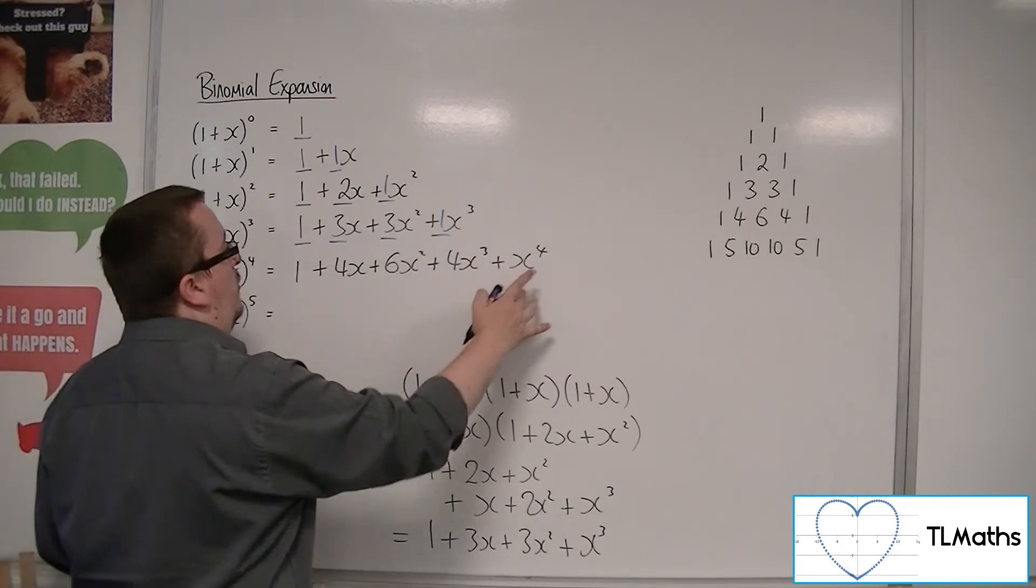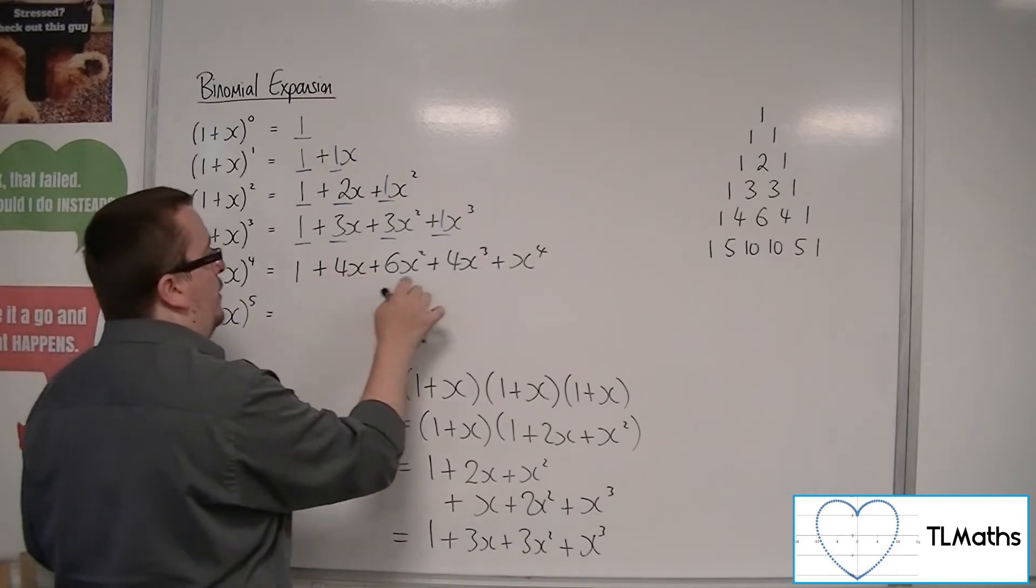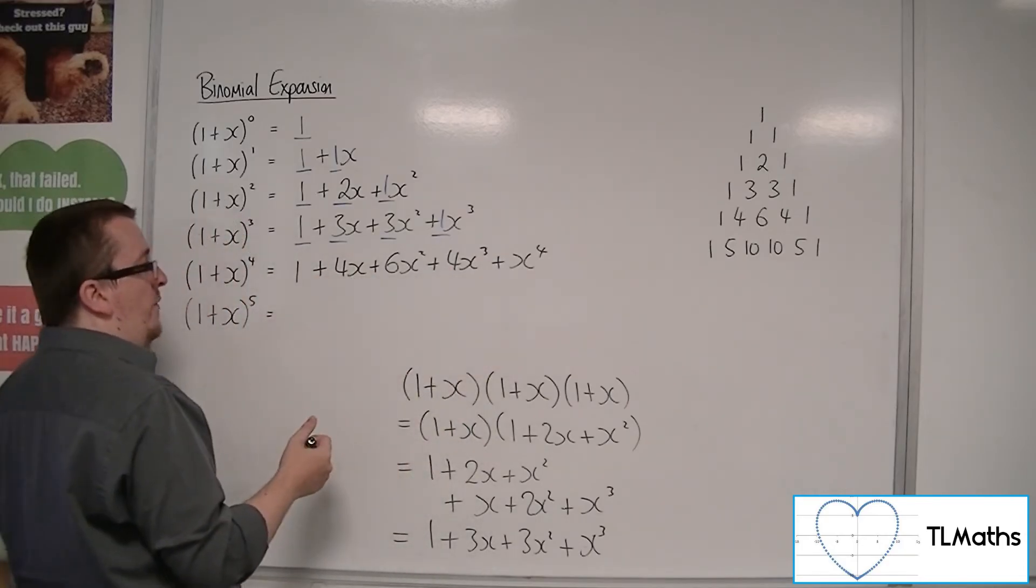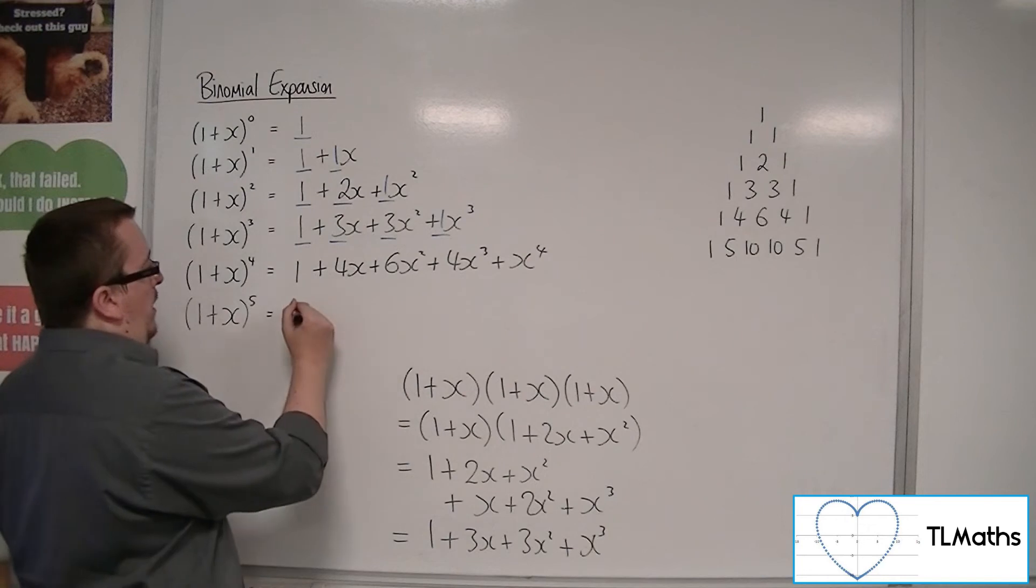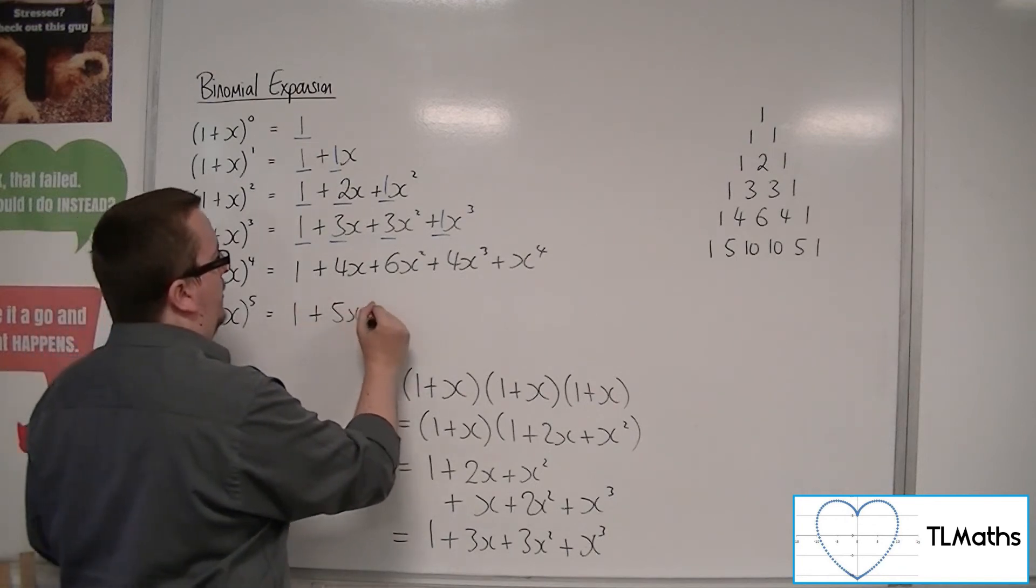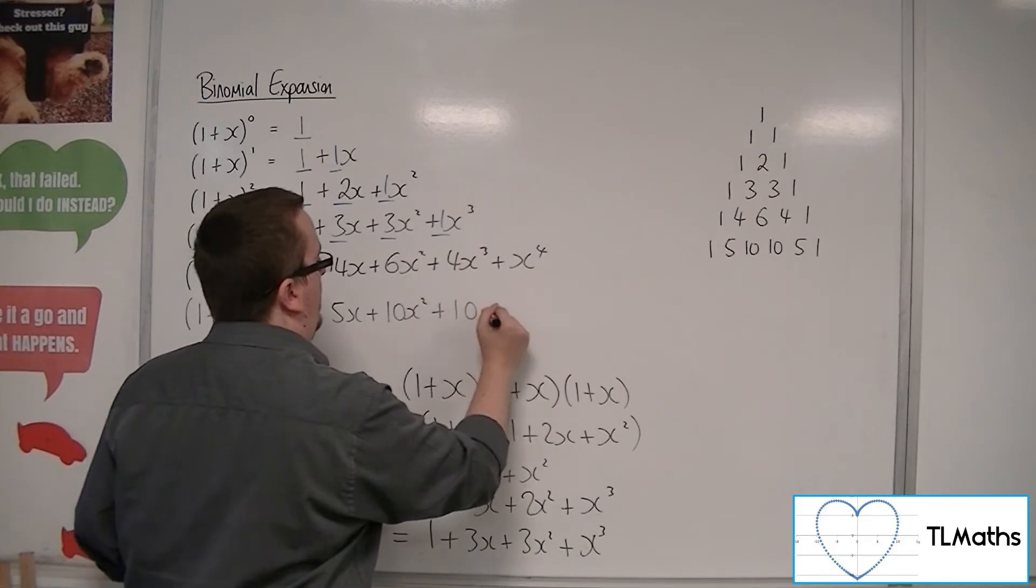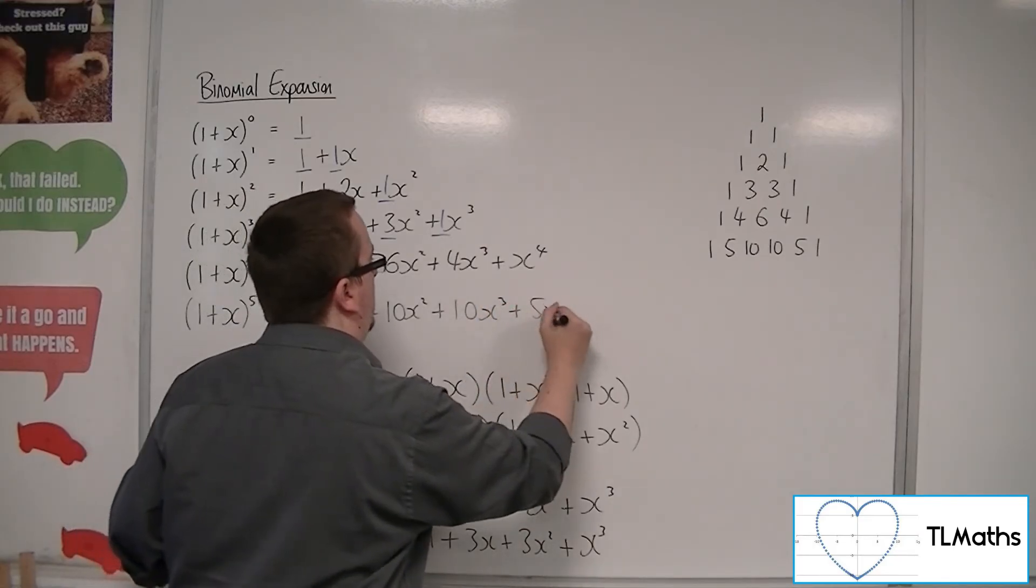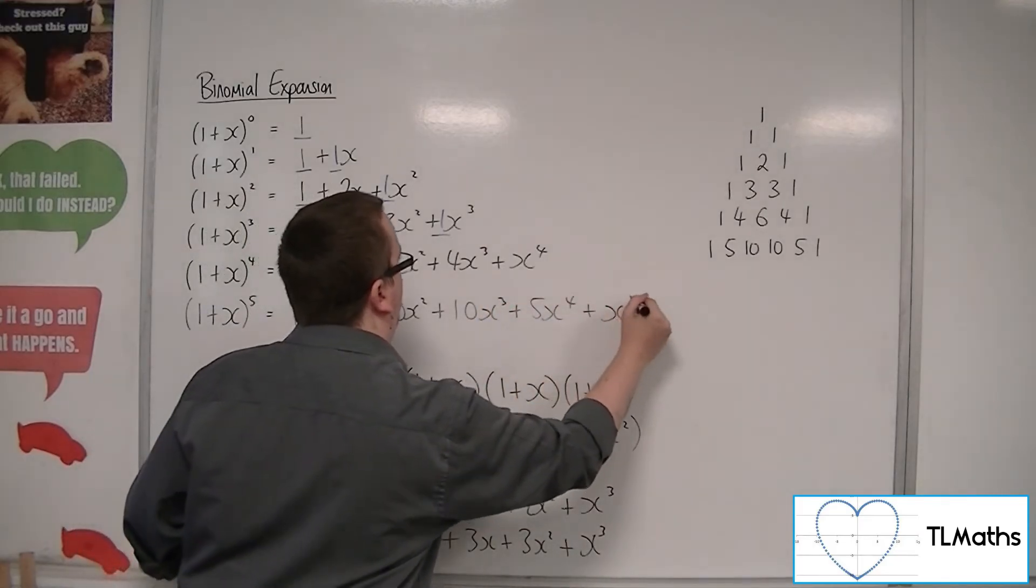So the powers of x are increasing, and I've got the coefficients of Pascal's triangle on that row. So the next one would be 1+5x+10x^2+10x^3+5x^4+x^5.